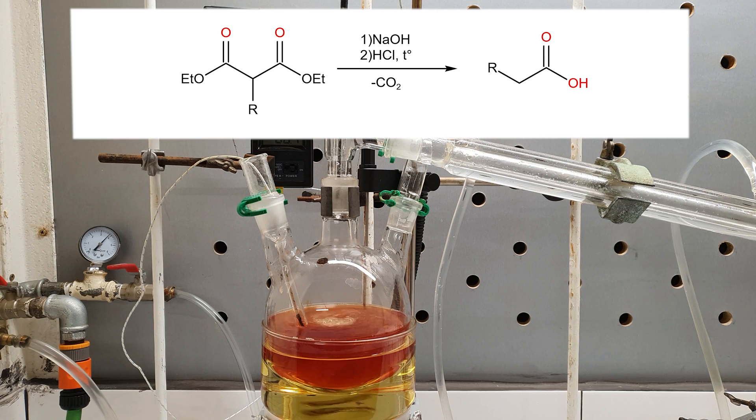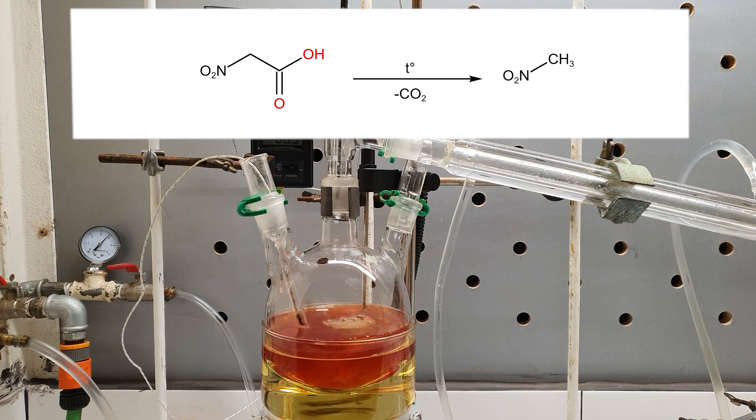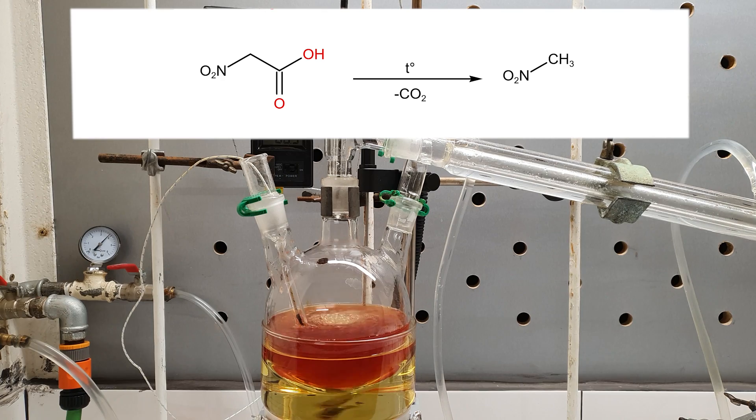The closest example is the malonic synthesis, in which the substituted malonic ester decarboxylates immediately once it's hydrolyzed. In our case, the nitro group is an even stronger electron withdrawing substituent and the nitroacetic acid easily decarboxylates, yielding nitromethane.